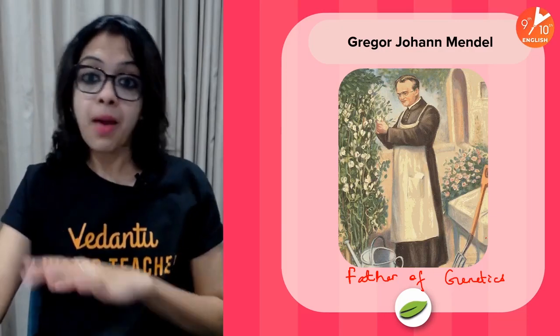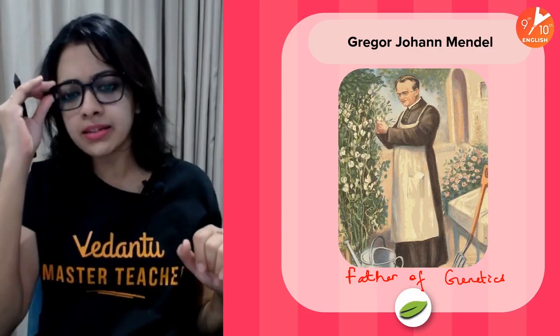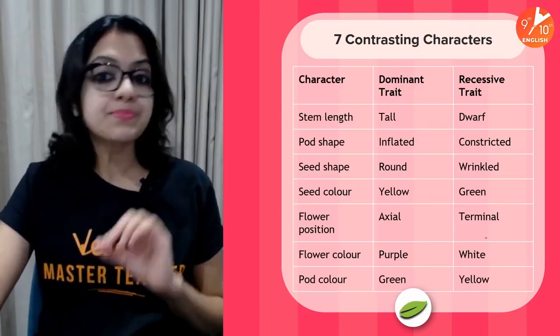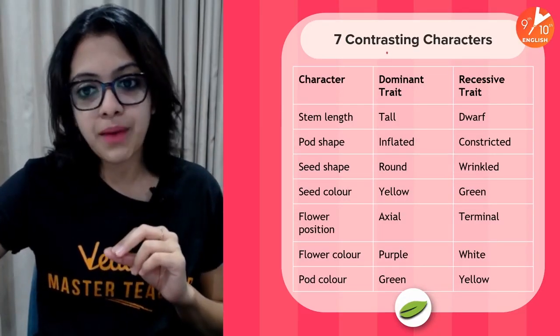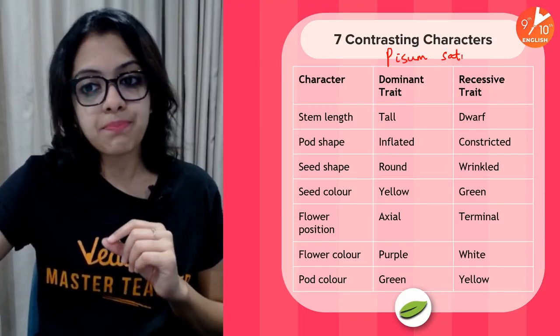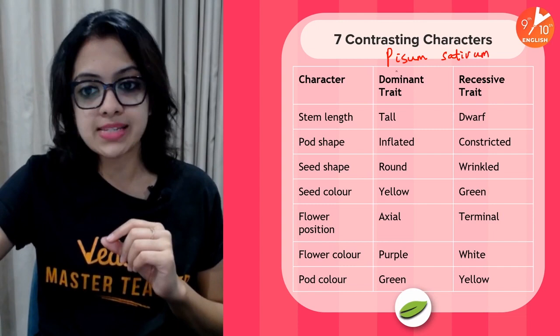As you can see in this image, Mendel had a beautiful pea garden. He lived in an Austrian monastery, and this is a portrait of Mendel in his beautiful pea garden. The garden pea plant, as we commonly call it, was the plant Mendel chose for his experiments. We call it Pisum sativum — that is the botanical name of the garden pea plant.